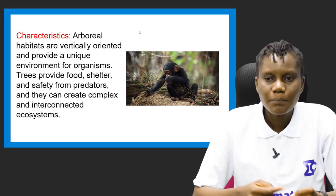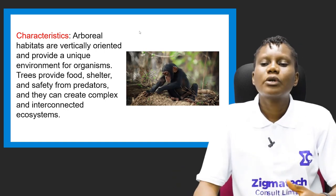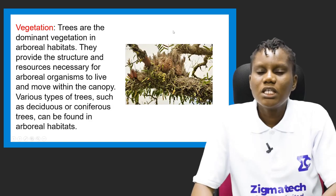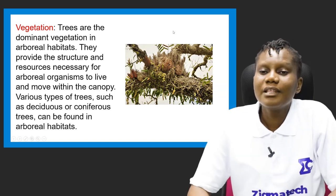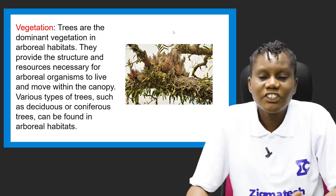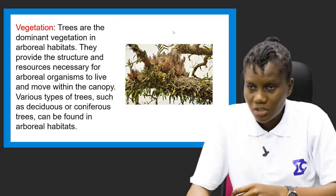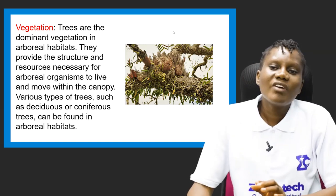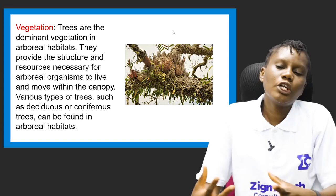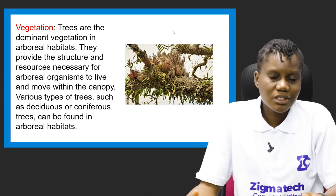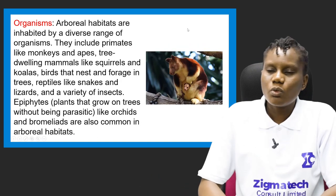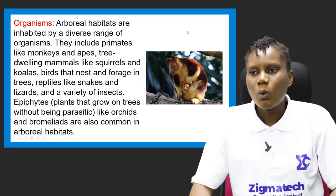What are the characteristics of arboreal habitats? They are vertically oriented and provide a unique environment for organisms. Trees provide food, shelter, and safety from predators, and they can create a complex and interconnected ecosystem. Trees are the dominant vegetation — not shrubs, not grasses. Various types such as deciduous or coniferous trees can be found in arboreal habitats.